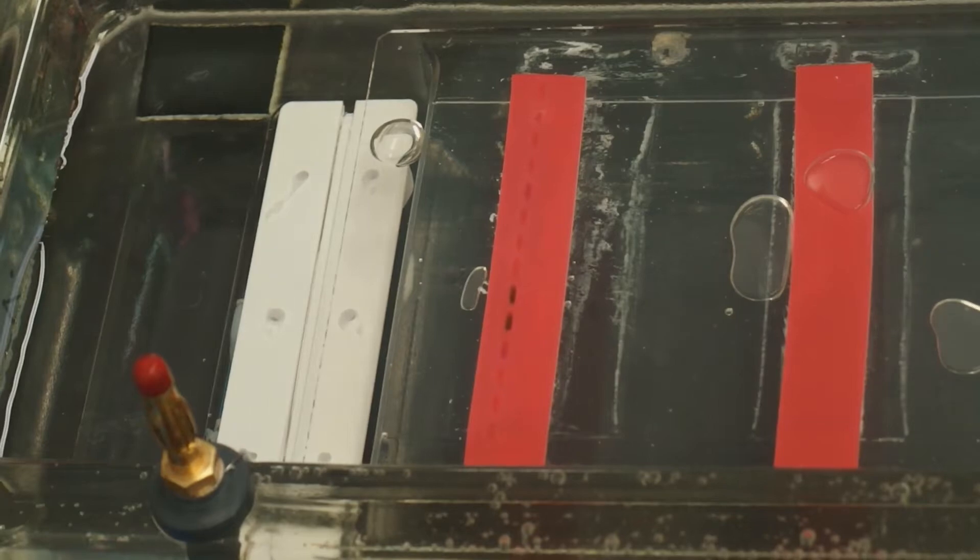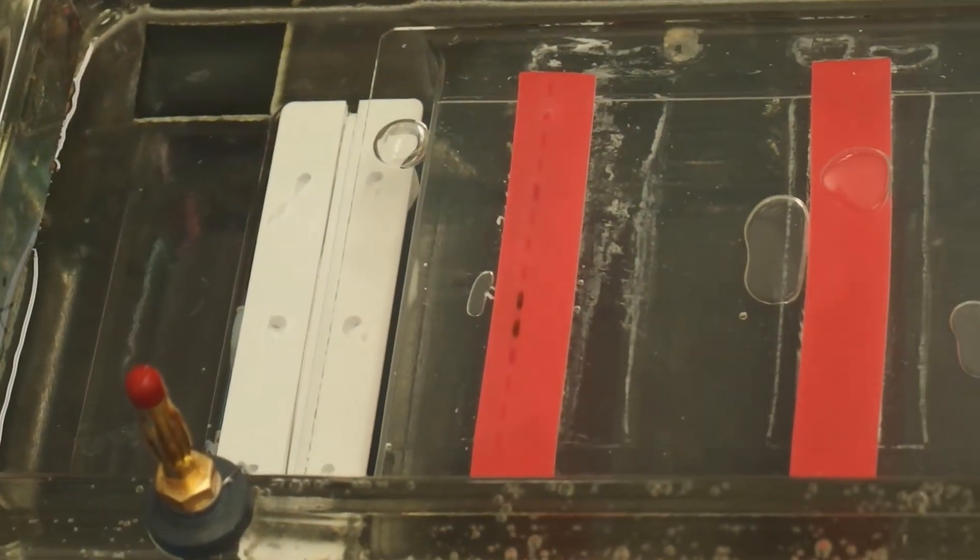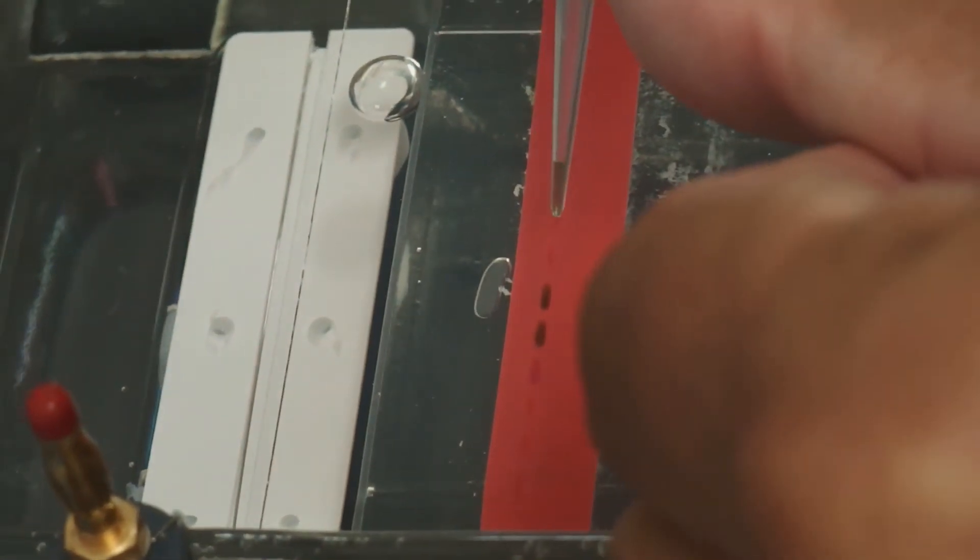Obviously, we don't want to poke holes into our agarose gel, so the objective is to get the pipette tip into the upper portion of the well without jabbing it through the agarose.